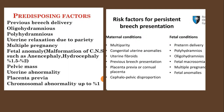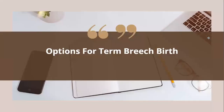Persistent breech risk factors include maternal conditions such as multiparity, fibroids, previous breech, placenta previa, and contracted pelvis. Fetal conditions include preterm delivery, polyhydramnios, oligohydramnios, fetal macrosomia, multiple pregnancy, and fetal anomalies. When going through this information, ask your junior to repeat some of the risk factors with you and tell you what she understands — this confirms that she has understood the material.